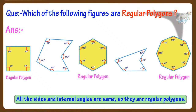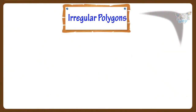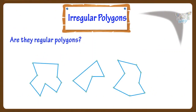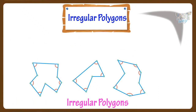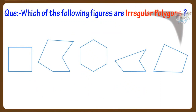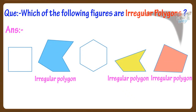Now let's learn about irregular polygons. Are these regular polygons? No, they are not regular polygons, as neither their sides nor their internal angles are the same — they are irregular polygons. Now which of the following figures are irregular polygons? These three figures are irregular polygons out of these.